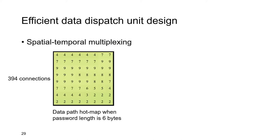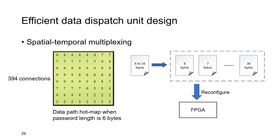We also found that when we fix the password length to 6 bytes, the total number of connections in the data path is reduced to about 400. This drives us to explore the temporal locality of the data path and propose the spatial-temporal multiplexing technique, which is based on the configurability of the FPGA. For passwords from 6 to 16 bytes, we prune the data path and generate a bitstream file for each password length. Every time the password length changes, the FPGA is reconfigured with the corresponding bitstream. With this technique, the overhead of the data path is reduced on each bitstream.